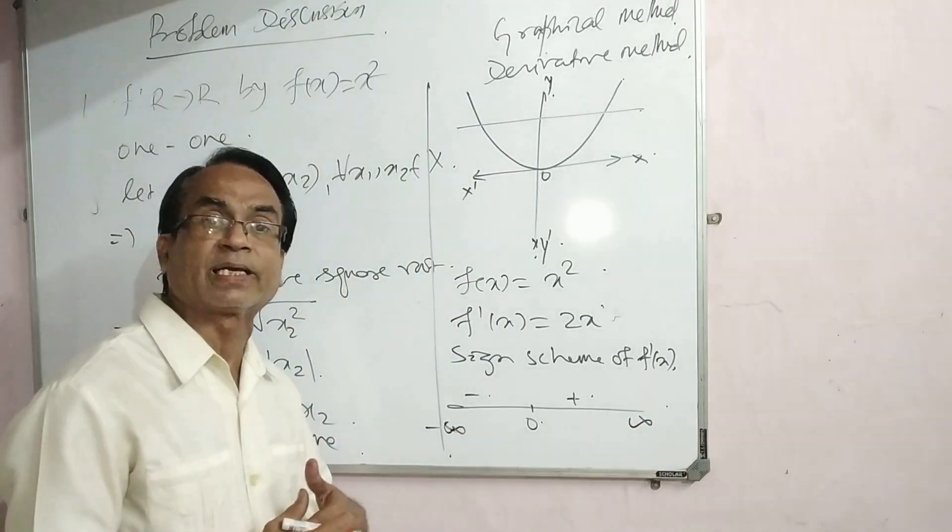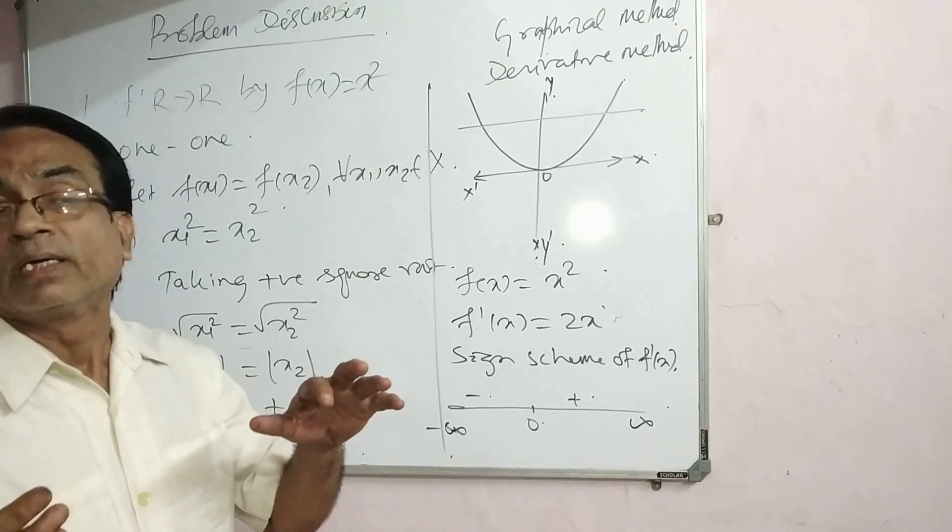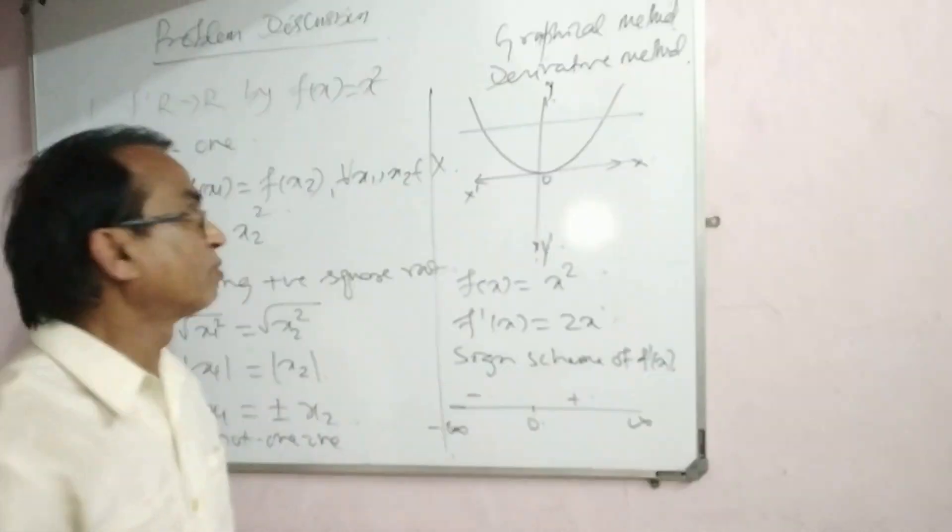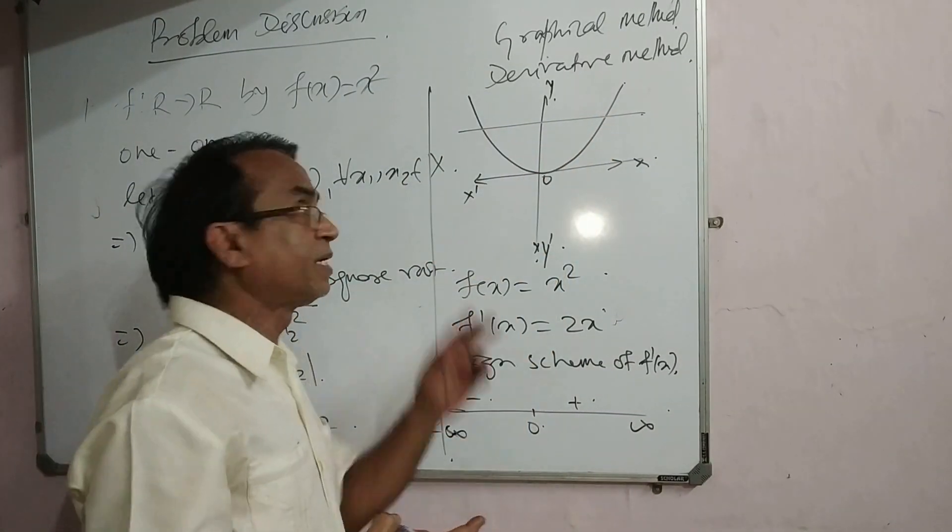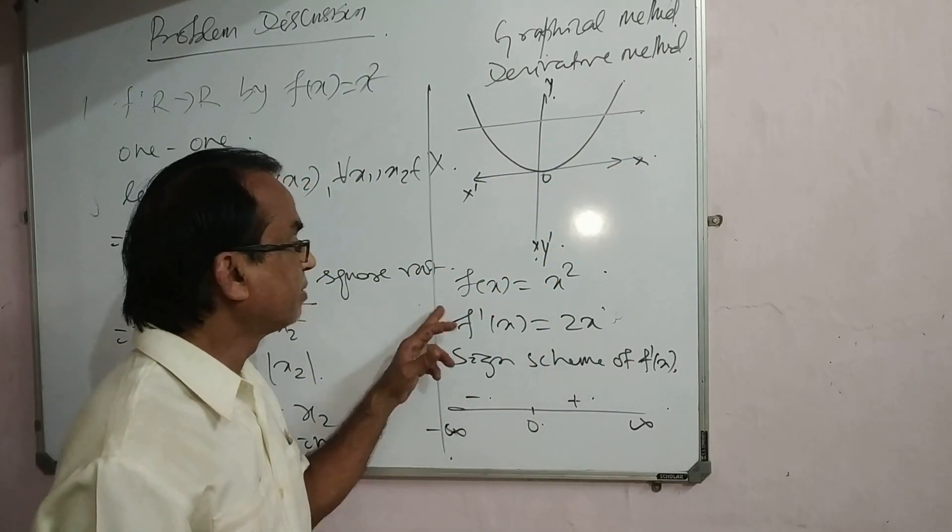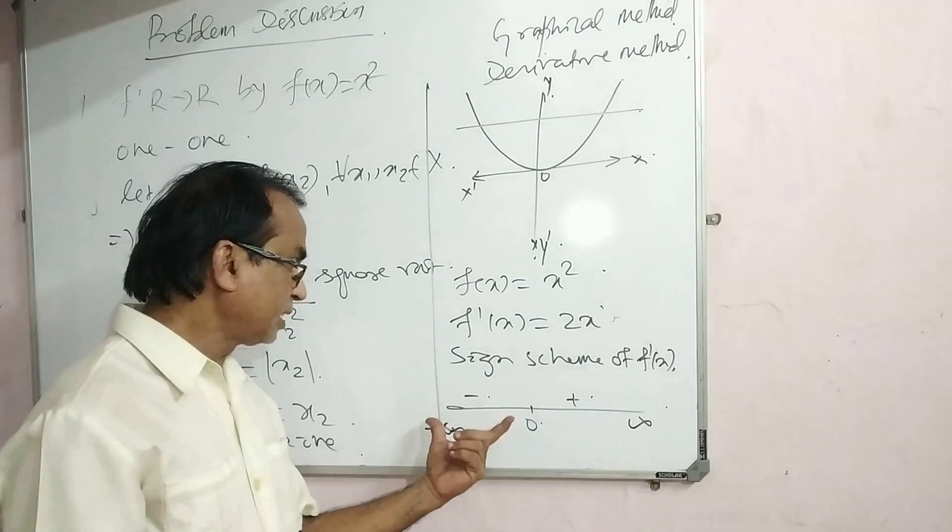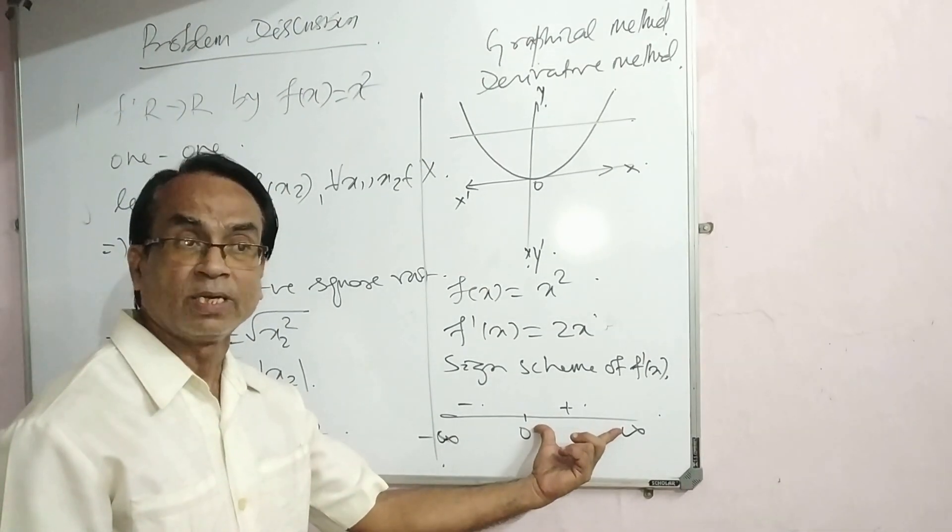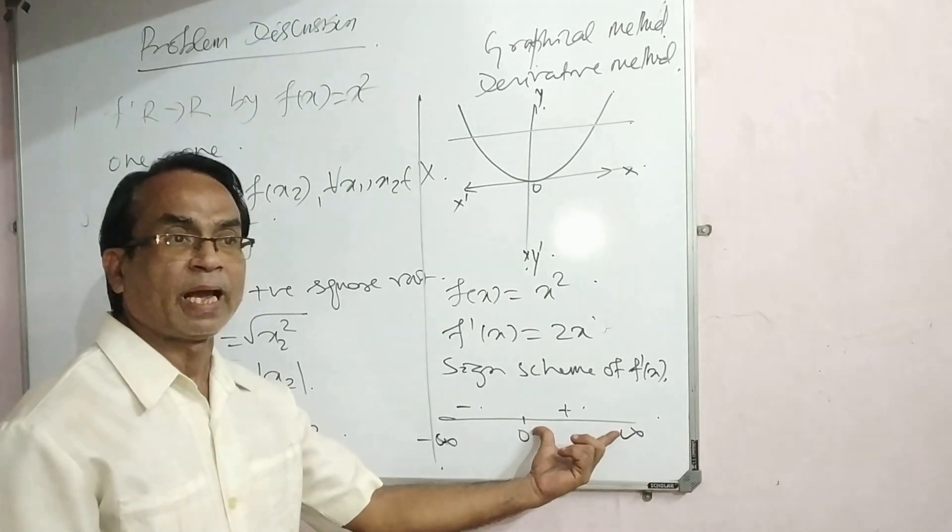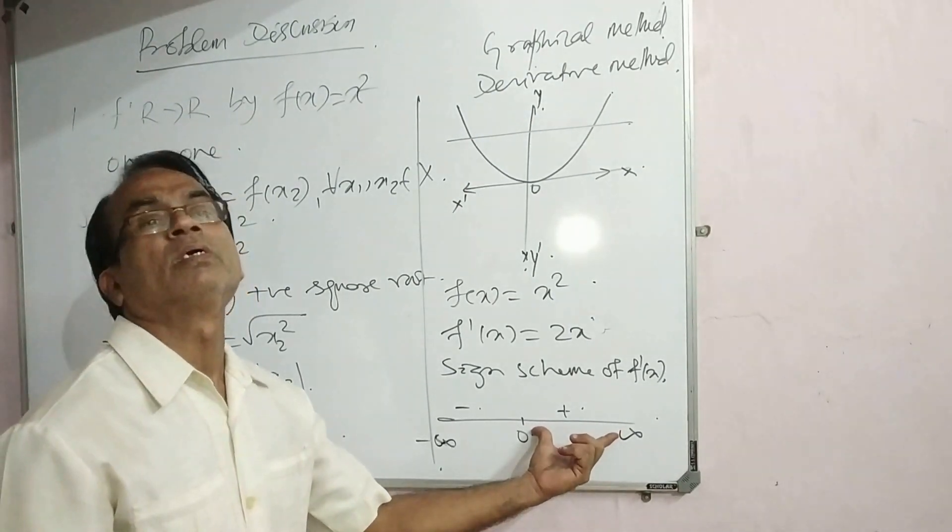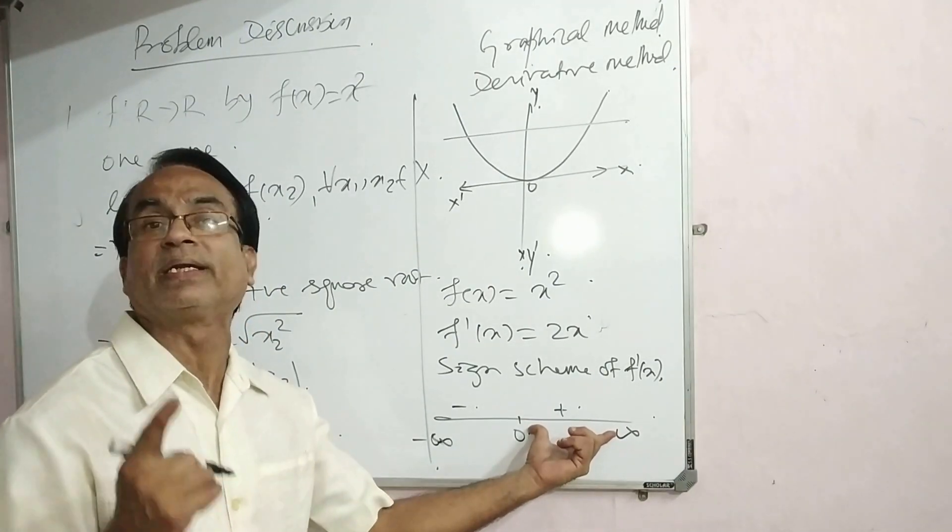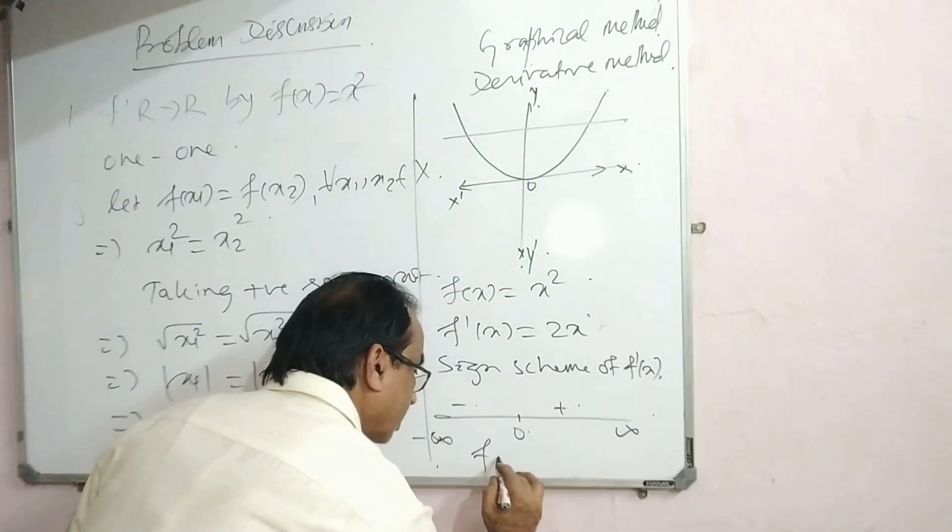The function is both monotonically increasing and monotonically decreasing in the domain minus infinity to plus infinity. If a function is both increasing and decreasing, it is not one-one because a line intersects two parts. This part is decreasing and this part is increasing, so it is not one-one.